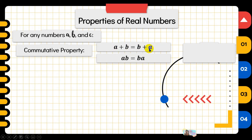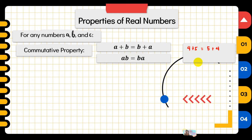For addition, we have A plus B equals B plus A. For example, if A is 4 and B is 5, that's equal to 5 plus 4 — that's the commutative property. Also, for multiplication, 4 times 5 equals 20, which is equal to 5 times 4, which is also 20. So that's commutative property.